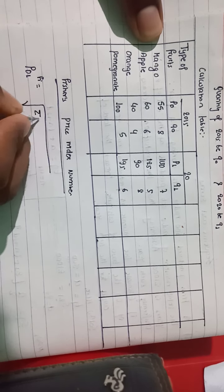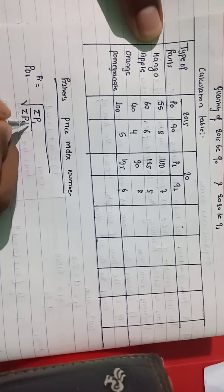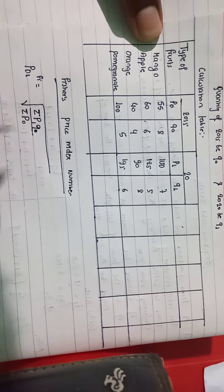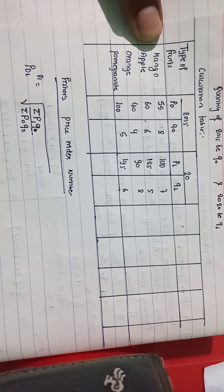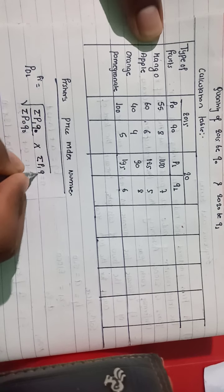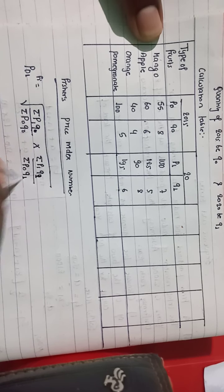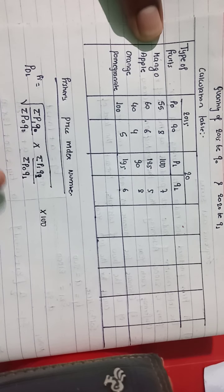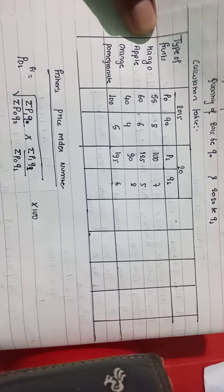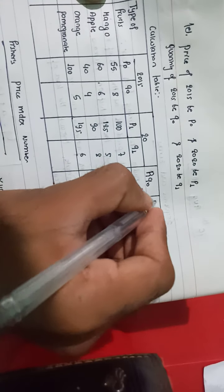The Fisher's Price Index formula is: the square root of (ΣP1Q0 / ΣP0Q0) multiplied by (ΣP1Q1 / ΣP0Q1), all multiplied by 100. So in the calculation table, we need to compute four columns: P1Q0, P0Q0, P1Q1, and P0Q1.